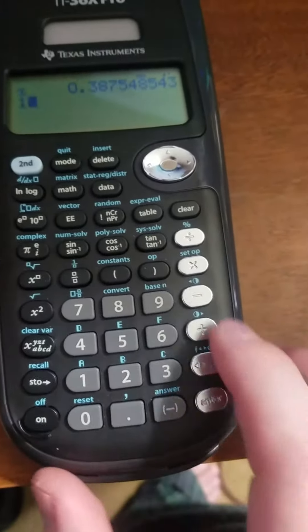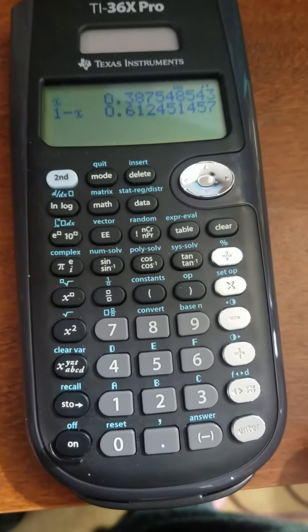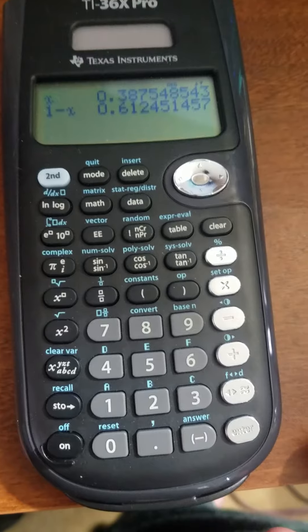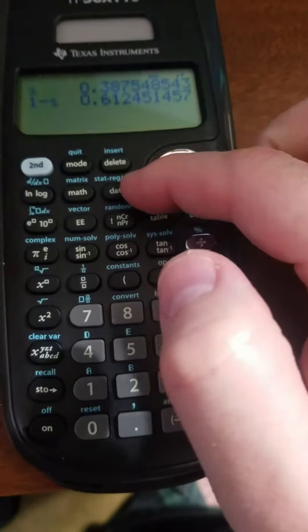Then I could use my complement rule. For instance, 1 minus X gives me 0.6124. It's a pretty handy thing to be able to do so you don't have to write it down and type it all back in. So that's the normal CDF.